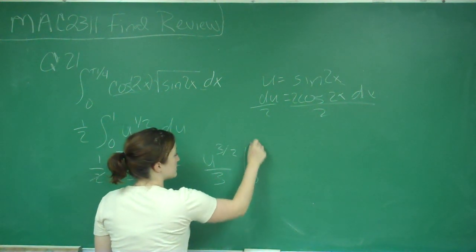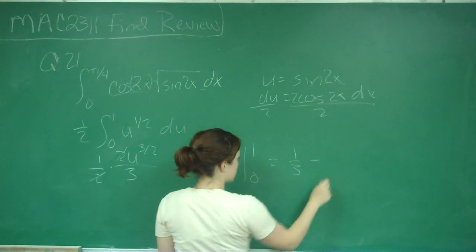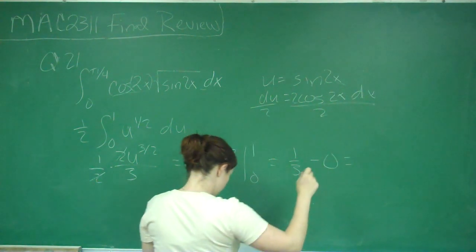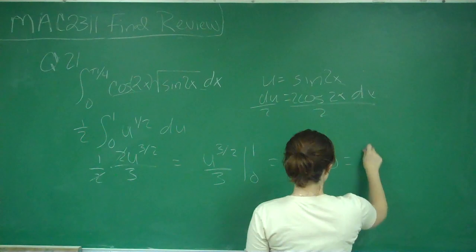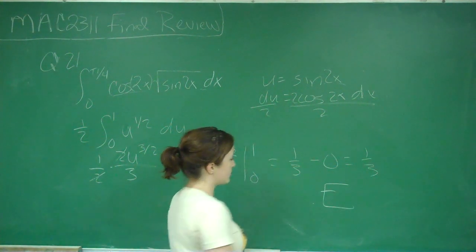We're going to evaluate that from 0 to 1. So we plug in 1 and we just get 1 third. Minus, we plug in 0, we get 0. So your answer should be 1 third. And that is correct. That's answer choice e.